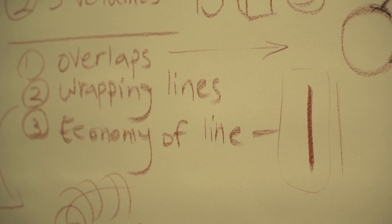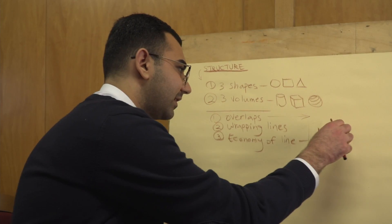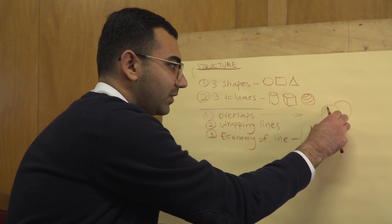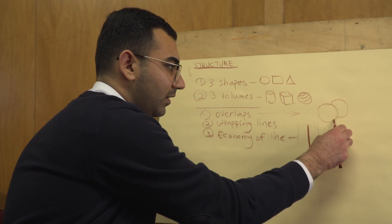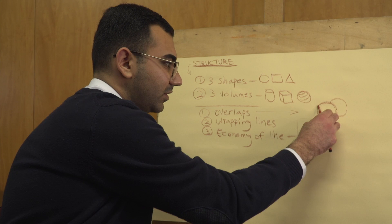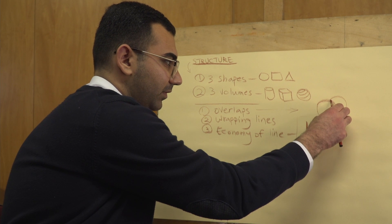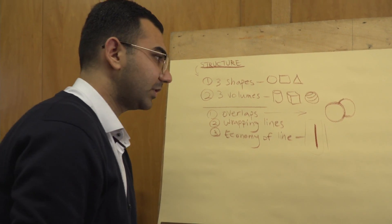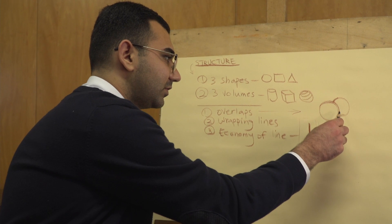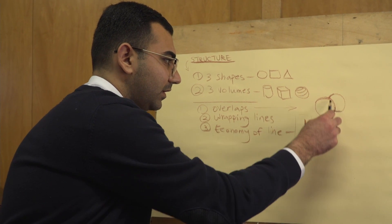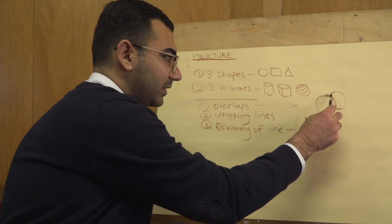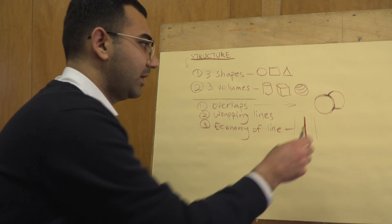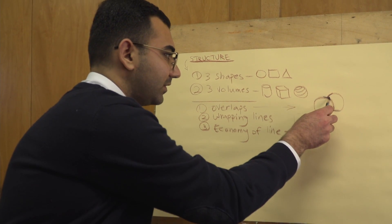We have overlaps in situations when you want to show that a shape is overlapping or is in front of another shape. In this situation, you need to darken your lines on the parts that are overlapping with the other shape. We call this overlap.